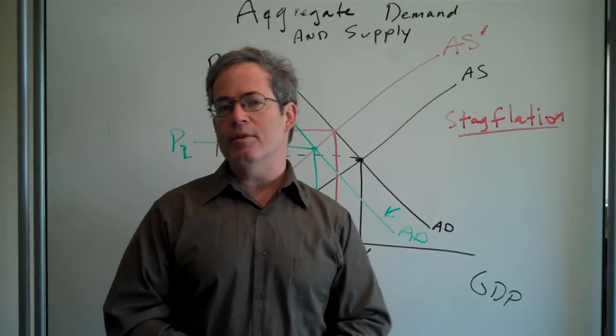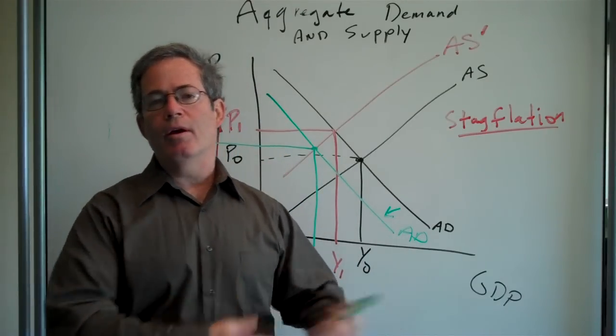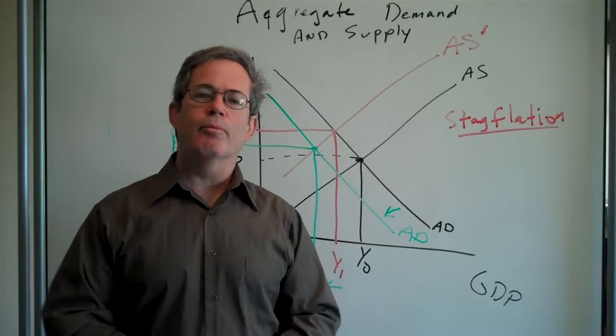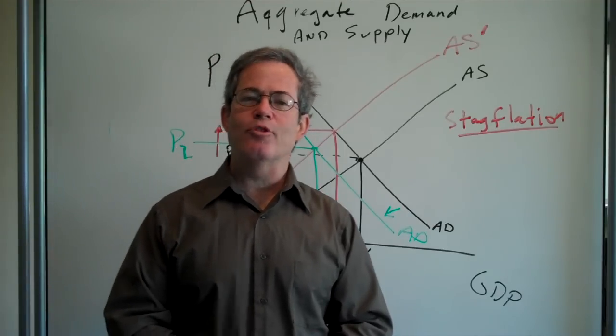So the government is on the horns of a dilemma. By helping to solve one problem, they make another problem worse. We call this a trade-off.